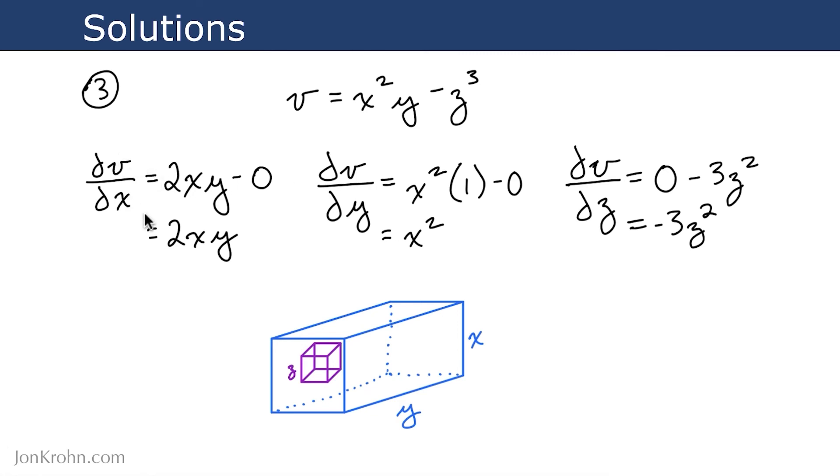So ∂v/∂x comes out to 2xy. ∂v/∂y comes out to x². And ∂v/∂z comes out to negative 3z².